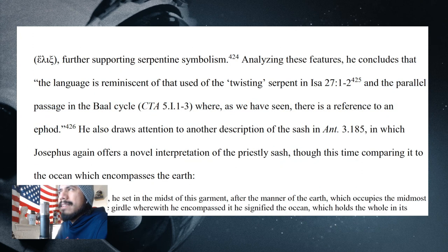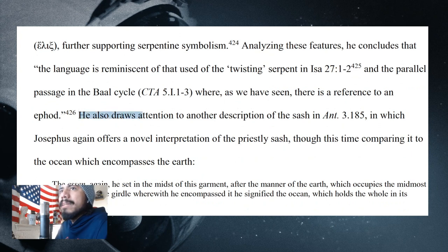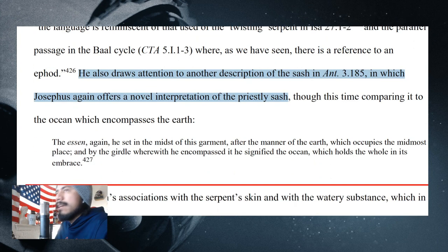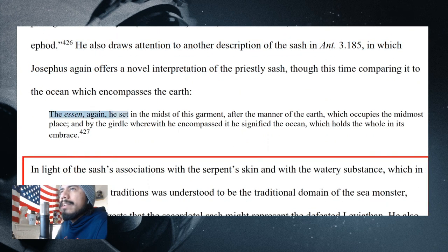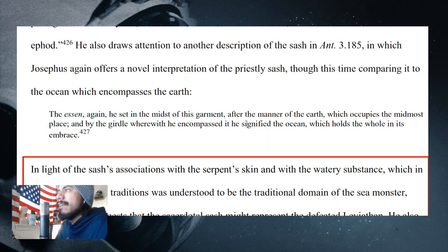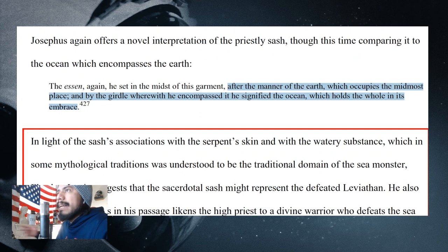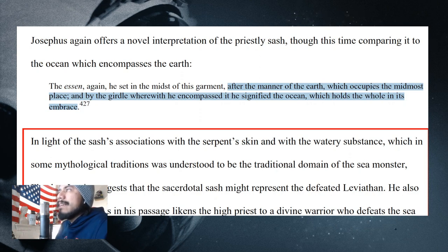He also draws attention to another description of the sash in Antiquities 3.185, in which Josephus again offers a novel interpretation of the priestly sash, this time comparing it to the ocean which encompasses the earth. The translation reads that the breastplate and ephod are after the manner of the earth which occupies the midmost place, and by the girdle wherewith he encompassed it, he signified the ocean which holds the whole in its embrace. So the breastplate area symbolizes the earth, and the sash which goes around it signifies the ocean.